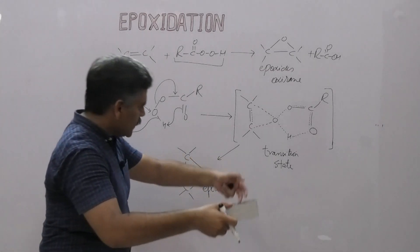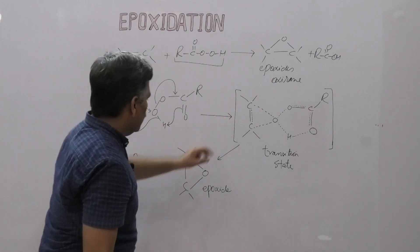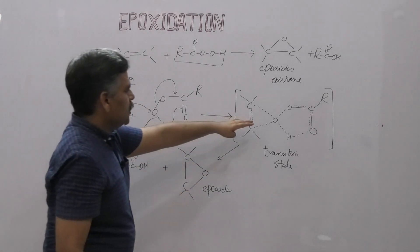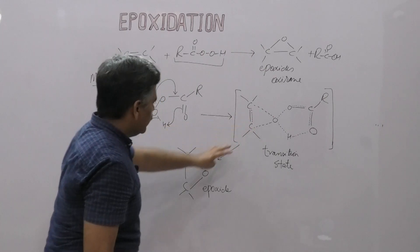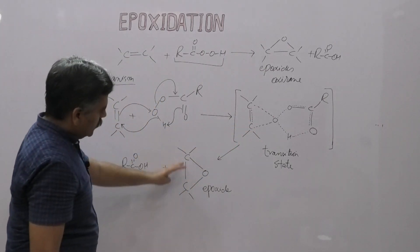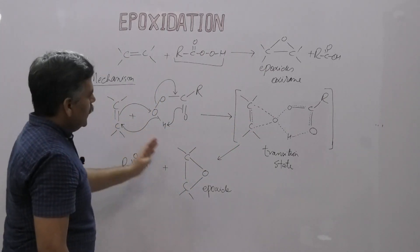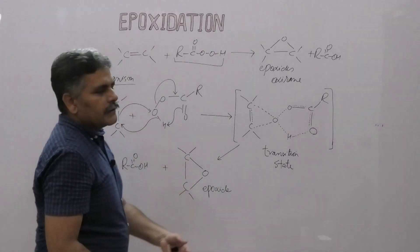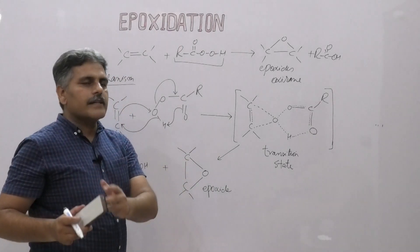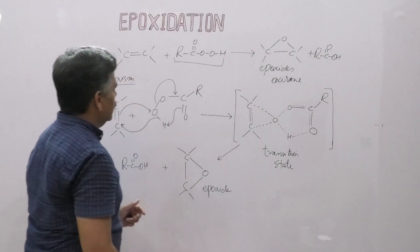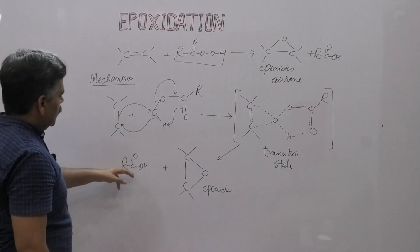Oxygen adds on the same face of this carbon-carbon double bond. This oxygen is abstracted by the carbon-carbon double bond, and the alkene system — ethene or any alkene — is oxidized. That's why epoxidation is known as an oxidation reaction of alkenes. The carboxylic acid is the by-product formed in this reaction.